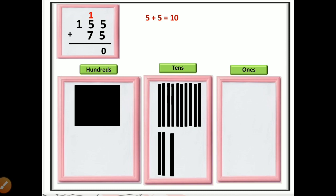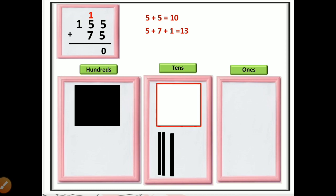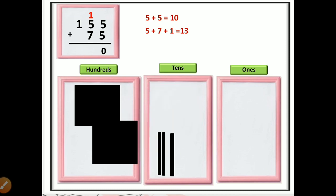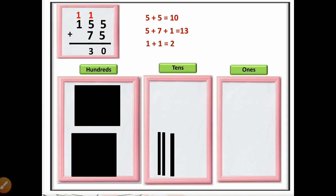One is carry-forwarded. Now we add the tens position: 7 plus 5 plus 1 carry equals 13. There are 13 sticks in the tens position, more than ten, so we combine ten sticks together to make a bigger square block, which moves to the hundreds place. Three sticks are left in the tens place, so 3 comes here and 1 is carry-forwarded to the hundreds place.